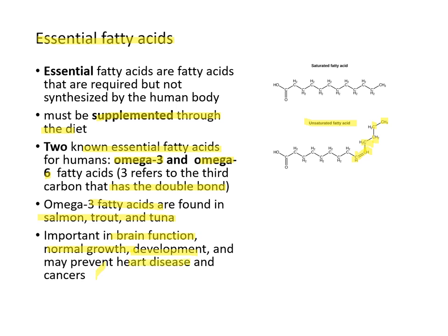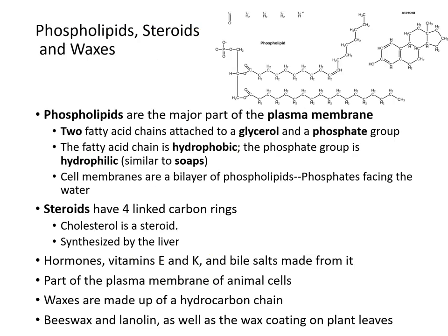Phospholipids are the major part of the plasma membrane. A phospholipid has two fatty acid chains attached to a glycerol, and that glycerol also has a phosphate group on it. Here is the glycerol molecule, with the phosphate attached to one end, and the two fatty acid chains on the other — that is a phospholipid, which makes up your plasma membrane.